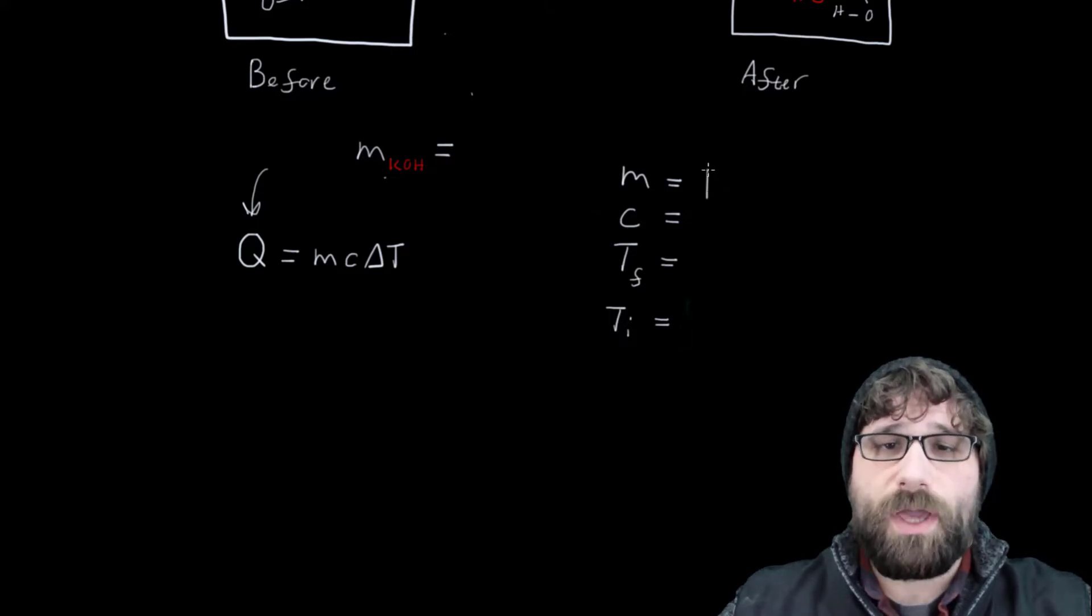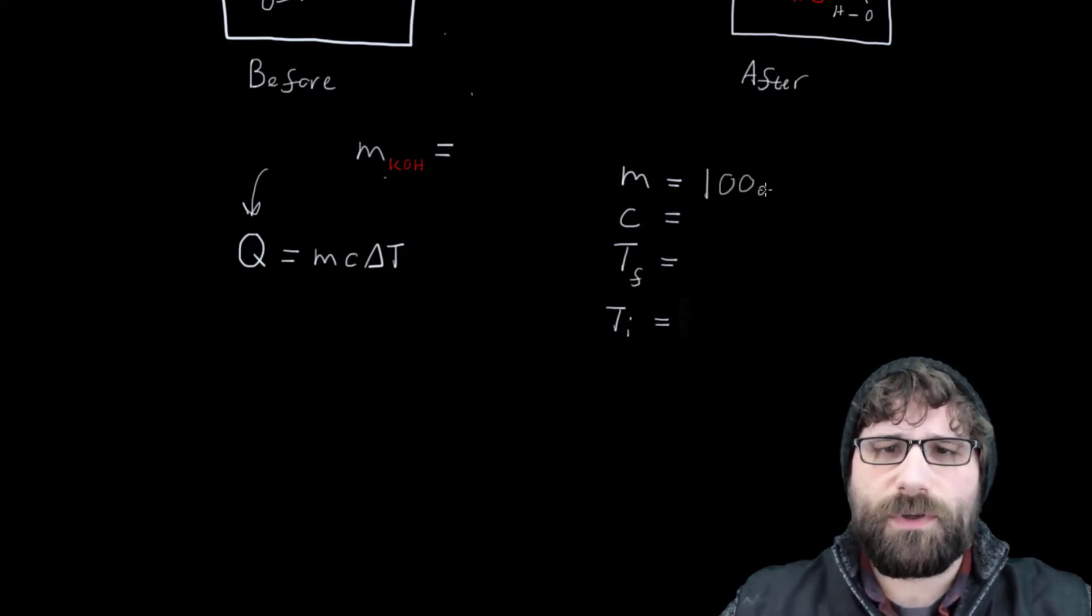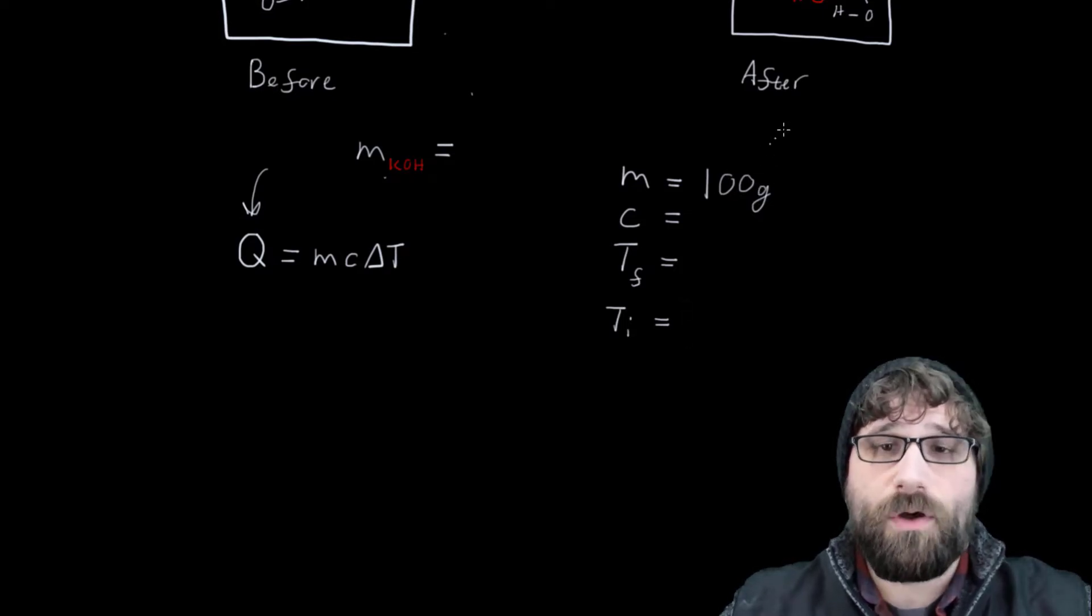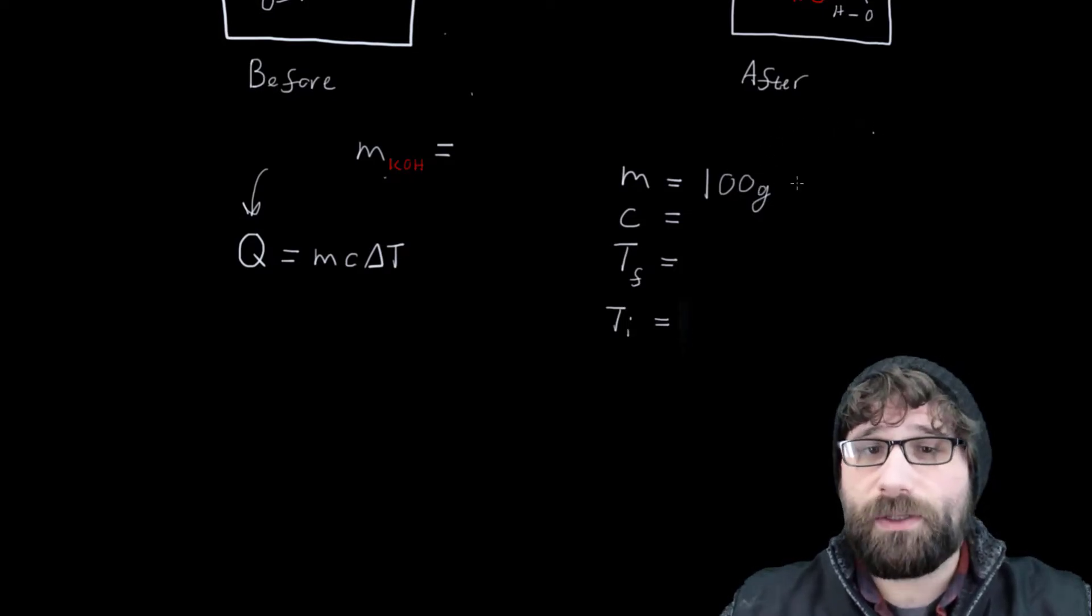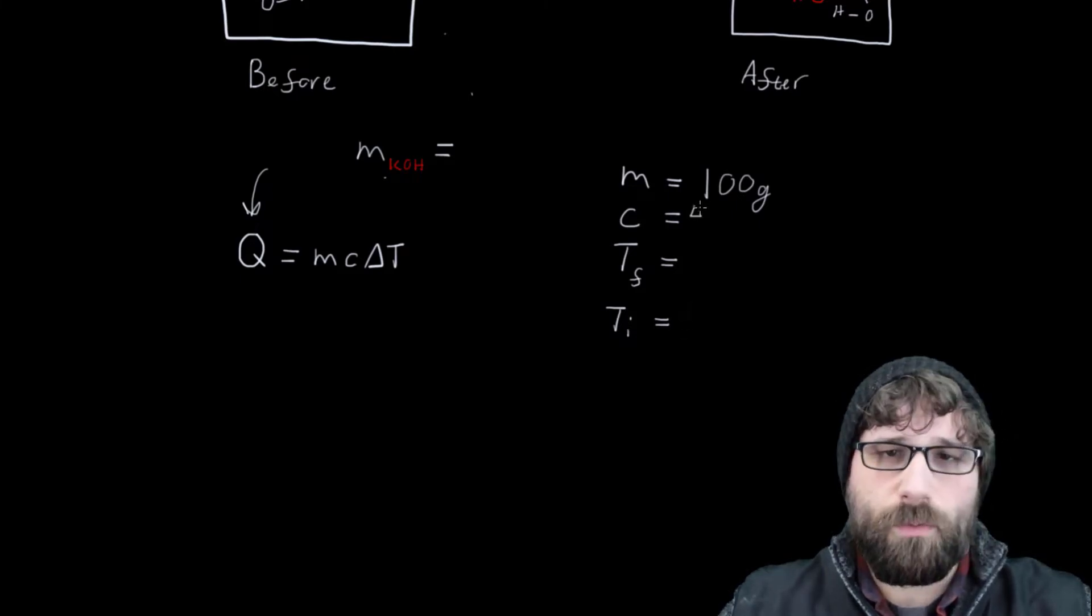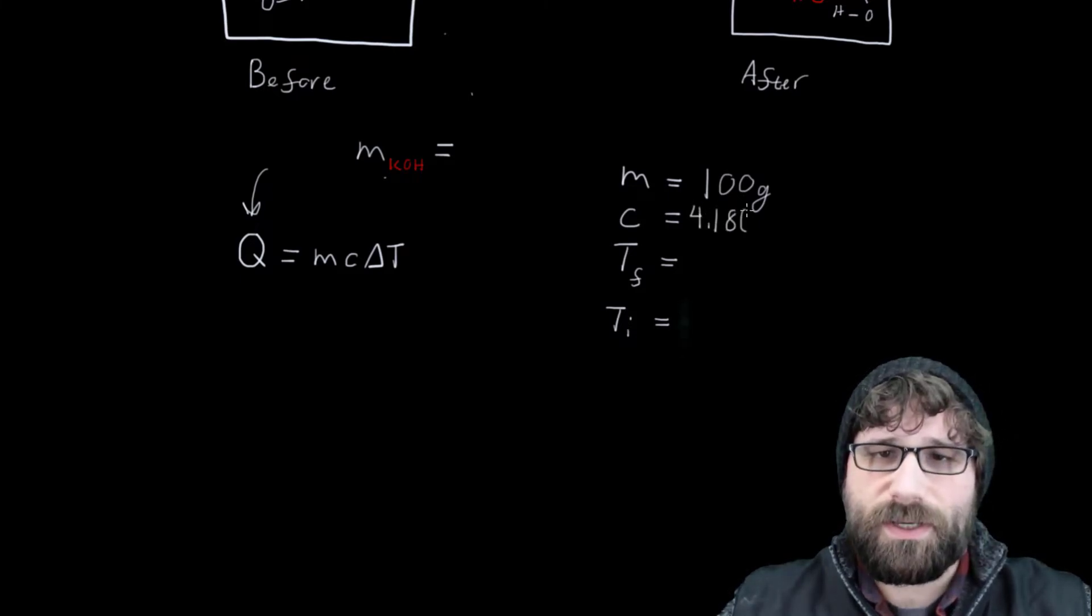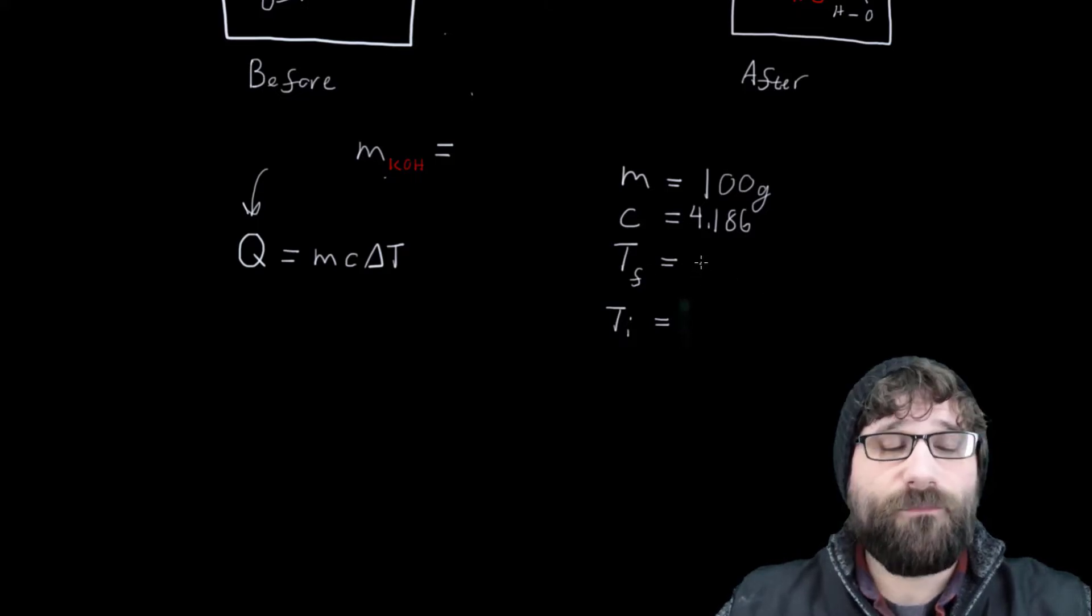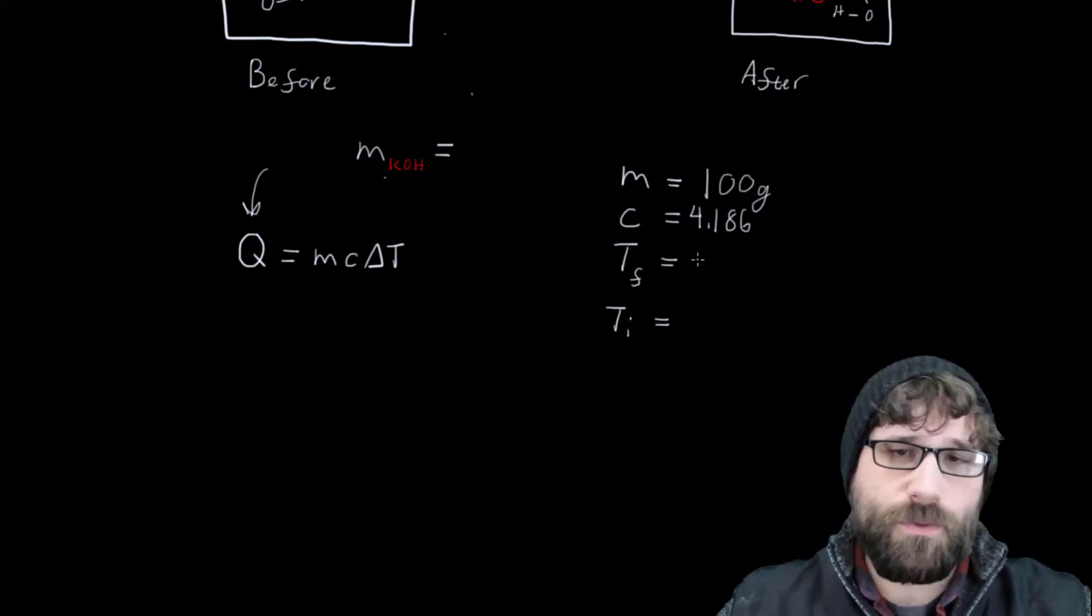For our mass of water, we had 100 grams. That's because we had 100 milliliters and water has a density of one gram per milliliter. Our specific heat of water is 4.186. Our final temperature for the water was 32 degrees Celsius and our initial temperature was 21 degrees Celsius.